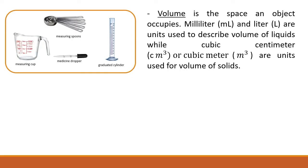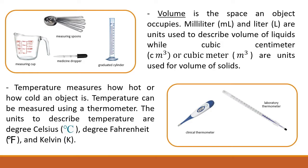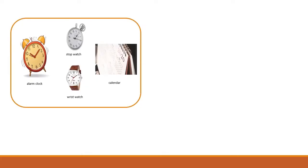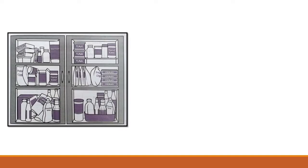Cubic centimeter or cubic meter are units used for the volume of solids. Next: clinical thermometer and laboratory thermometer. Temperature measures how hot or how cold an object is. Temperature can be measured using a thermometer. The units to describe temperature are degree Celsius, degree Fahrenheit, and Kelvin. And the last examples: alarm clock, stopwatch, wristwatch, calendar. Time can be measured using a clock or calendar. The units for time are seconds, minutes, days, months, and years.